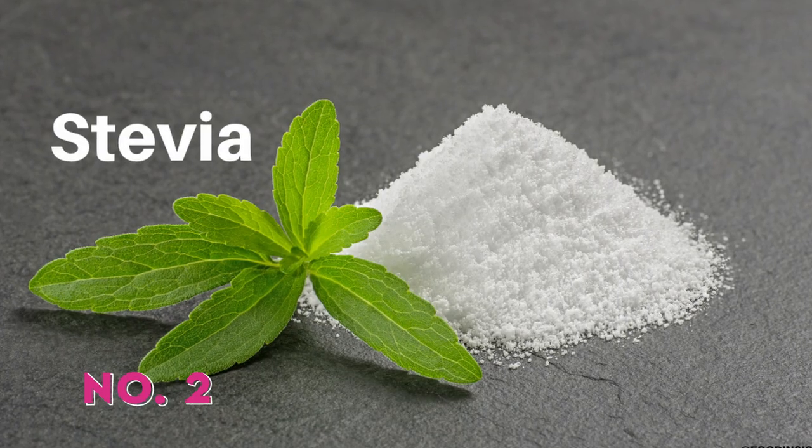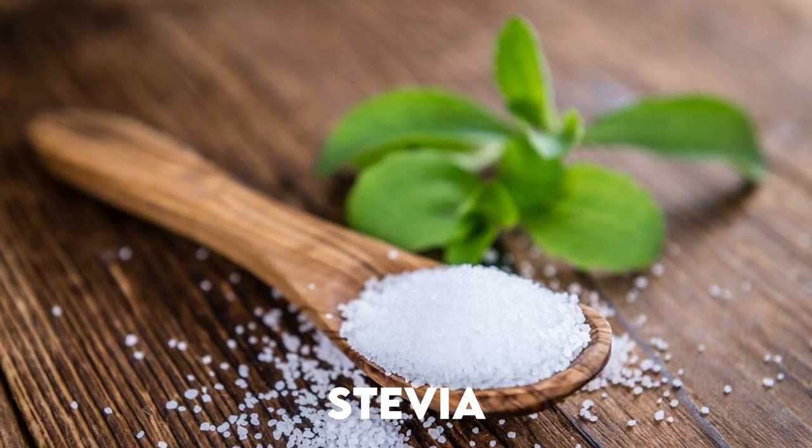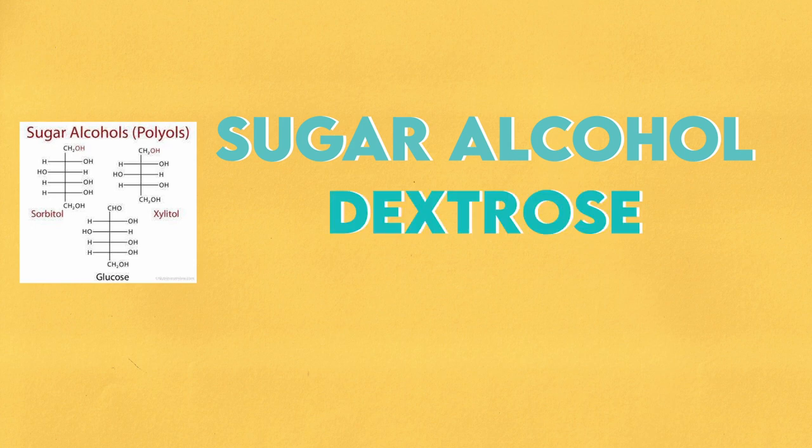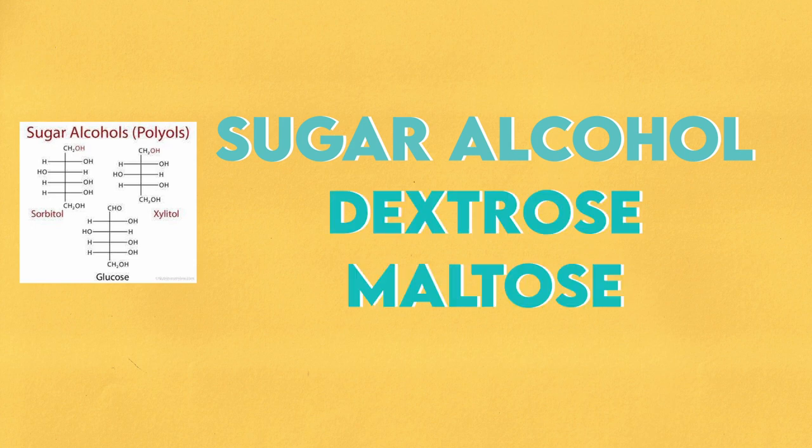Another form of sweetener which is technically not artificial and is a natural derivative is Stevia. Stevia is becoming more widely researched. It is also sweet. Drops formula and powder formula are available in different forms. But if you look at stevia brands, some contain fillers like dextrose or maltose. You should choose quality brands and source pure natural extracts.